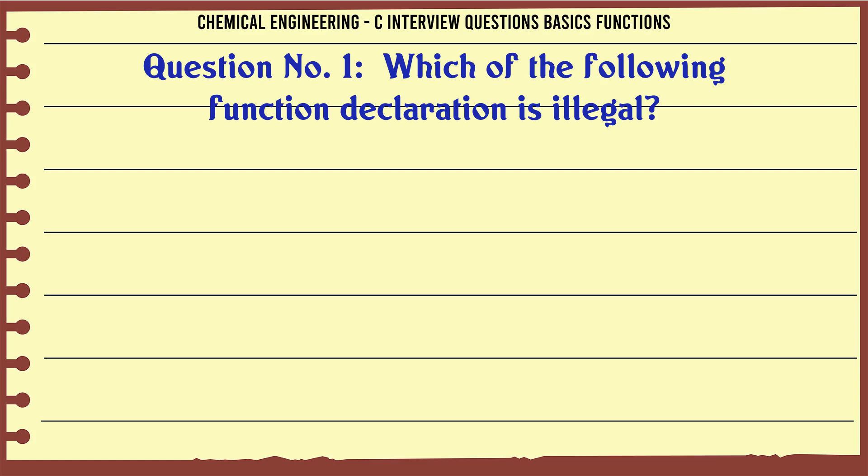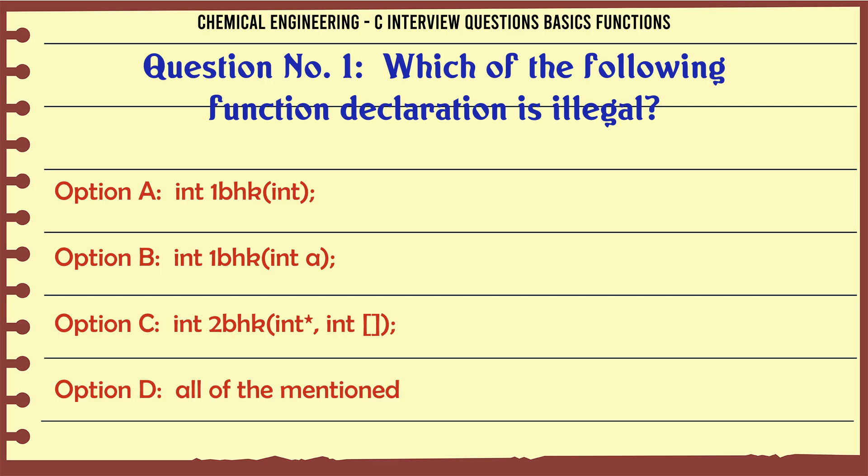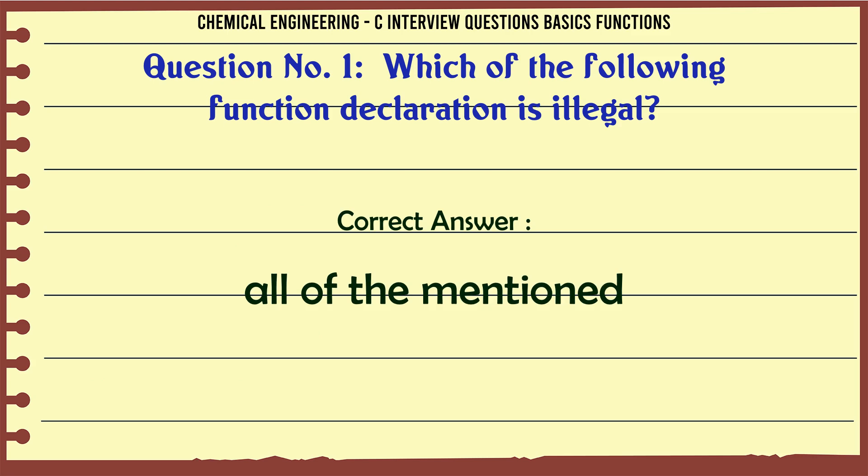Question 1: Which of the following function declaration is illegal? Option A: int 1bhk(int); Option B: int 1bhk(int a); Option C: int 2bhk(int*, int []); Option D: all of the mentioned. The correct answer is all of the mentioned.